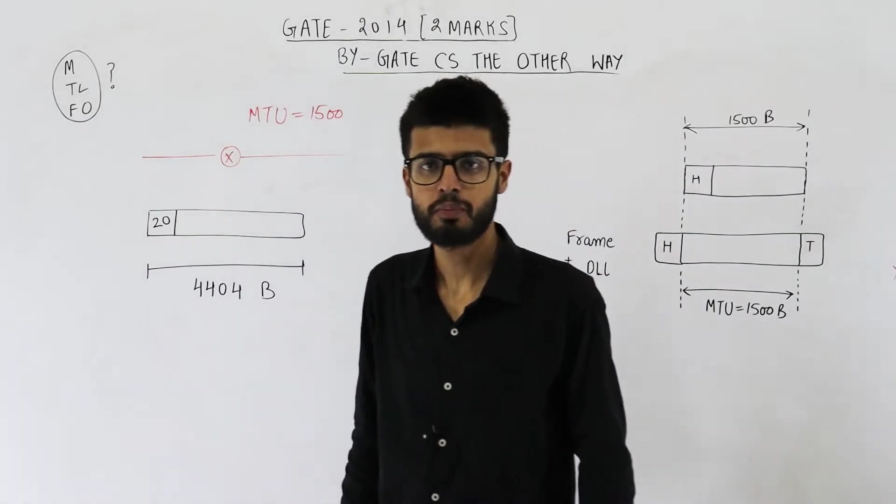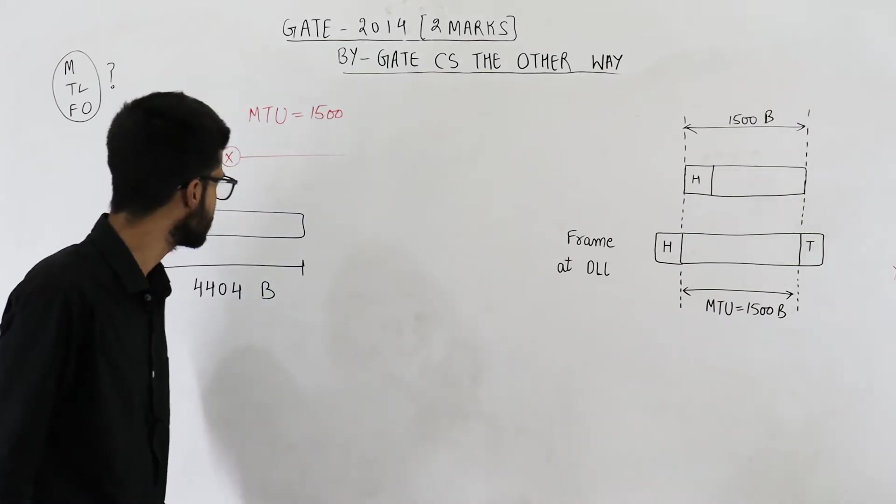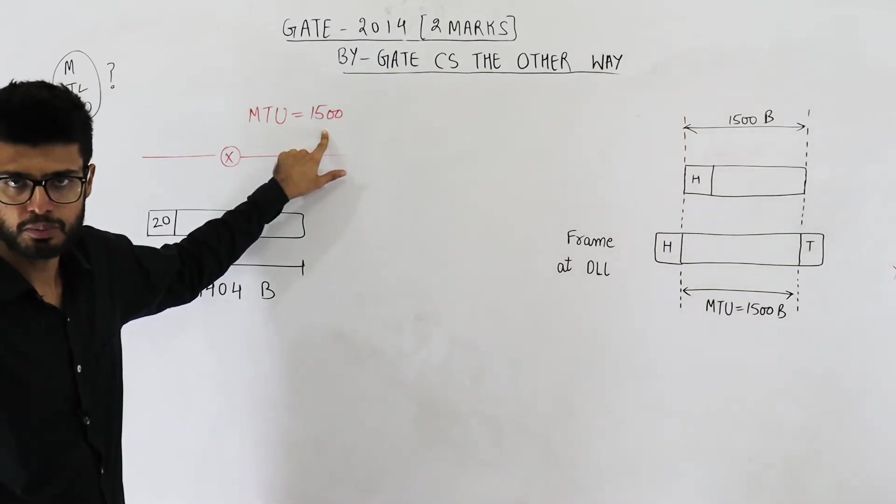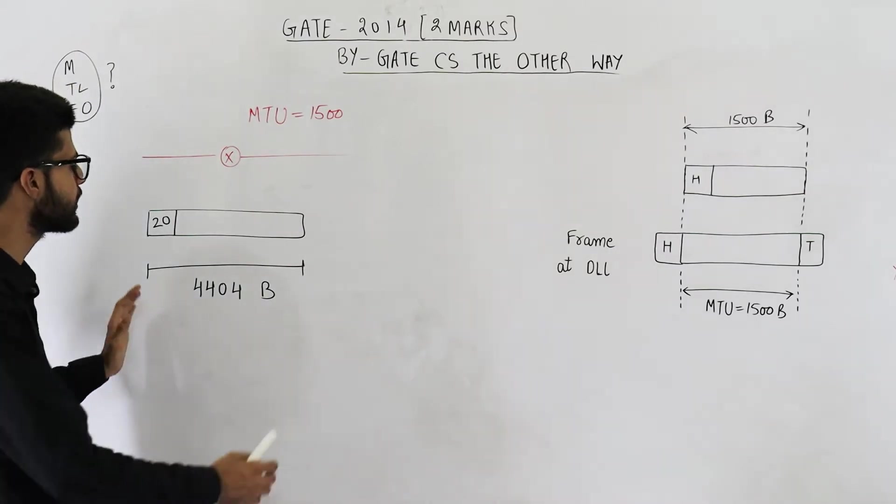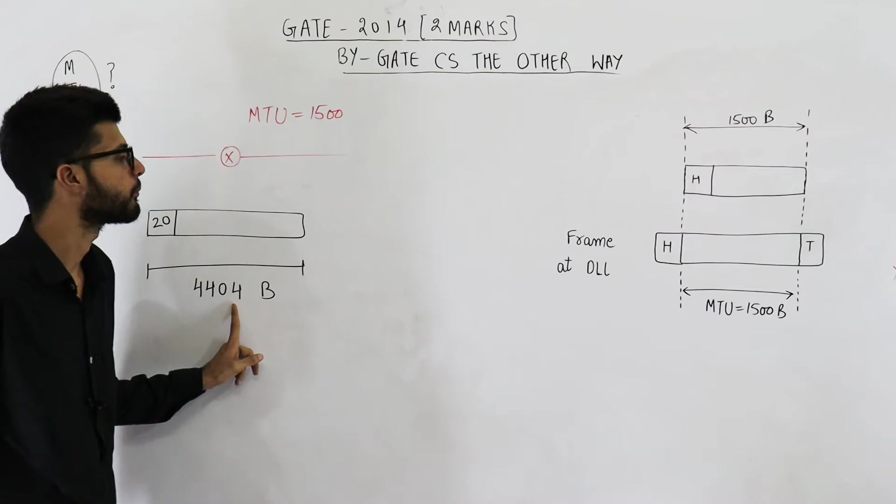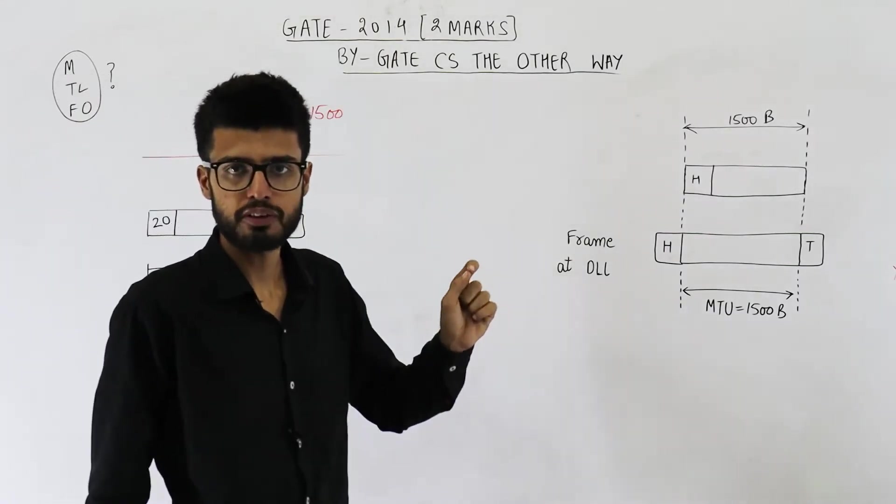Hello people, welcome back. This question is from GATE 2014 exam and is for two marks. They are saying some router with MTU equal to 1500 bytes receives an IP datagram of size 4404 bytes. Now they are asking what will be the properties of third fragment.